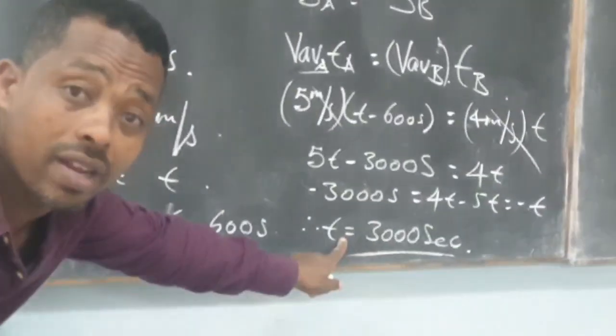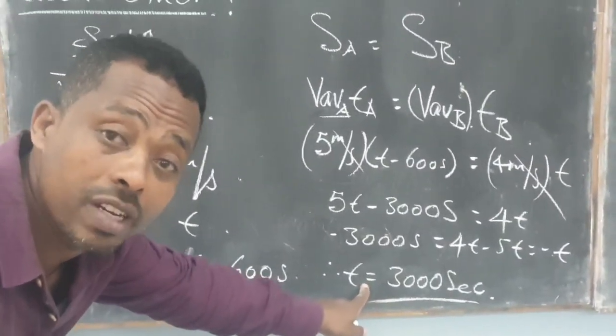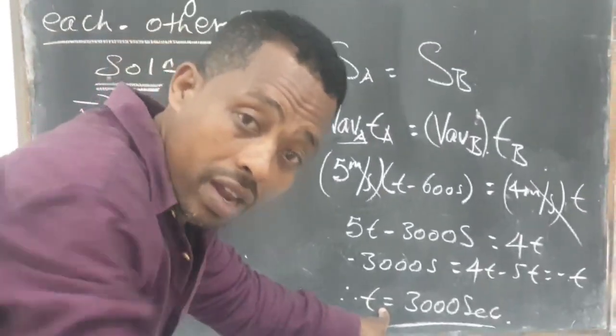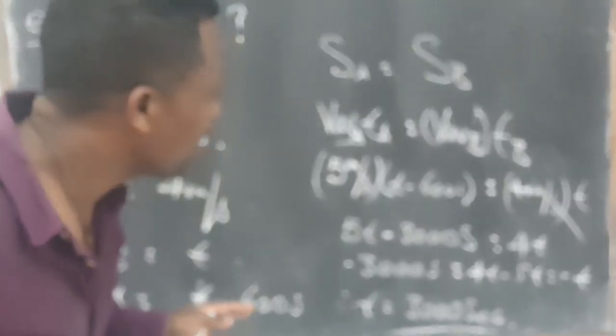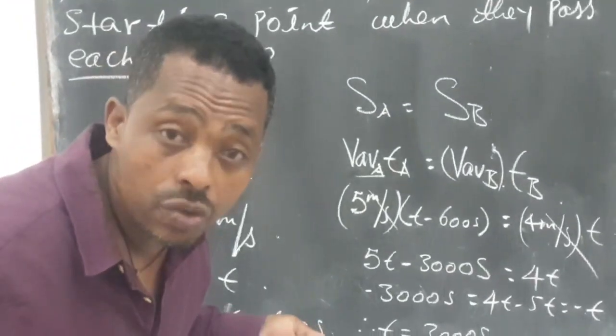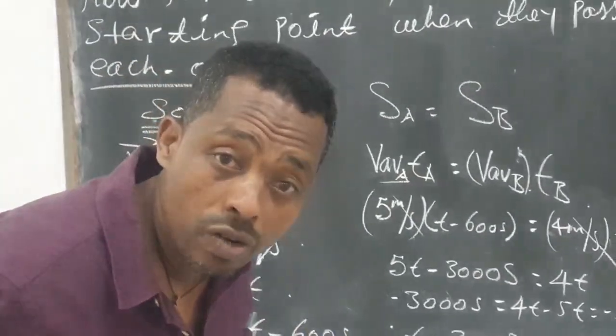This 3000 seconds is the time required for runner B to finish the entire displacement. Now we have the time. Therefore, it is easy to calculate the entire displacement of both runners.